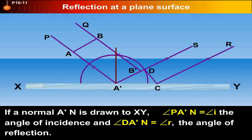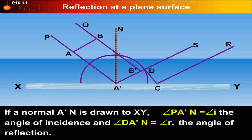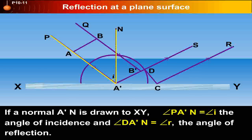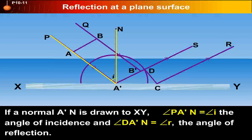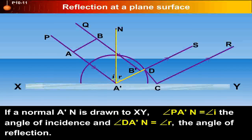If a normal A'N is drawn to XY, angle PA'N is equal to angle i, the angle of incidence, and angle DA'N is equal to angle r, the angle of reflection.